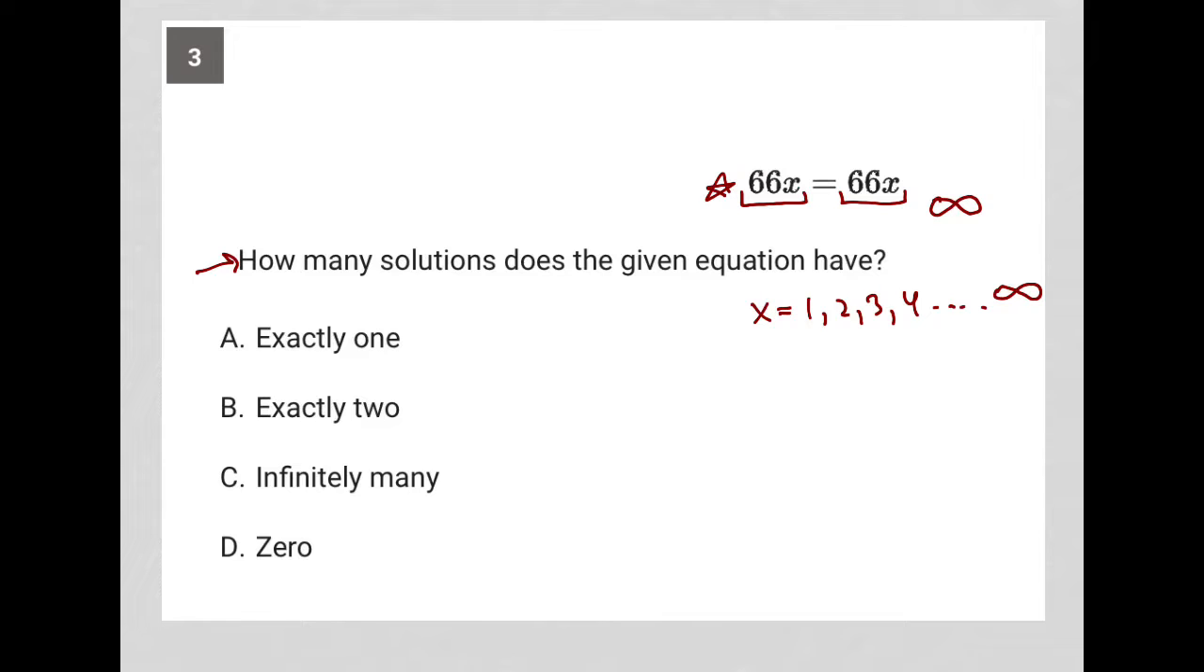both sides of the equation will always be a match. No matter what I plug in for the x value here, I have to also plug in for the x value there, and therefore the equation will still remain true. So there are infinitely many solutions. X can be an infinite number of values, and the equation will still be true. So choice C is correct.